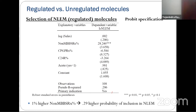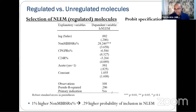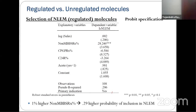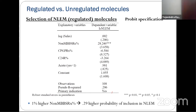A probit model examining selection into NLEM found that a molecule's non-MBBS prescription percentage significantly predicted its inclusion in the essential medicines list. This indicates our results are conservative: the molecules most important to rural and disadvantaged populations were brought into regulation, and after regulation, those molecules declined — meaning actual effects on disadvantaged populations may be larger than our estimates suggest.